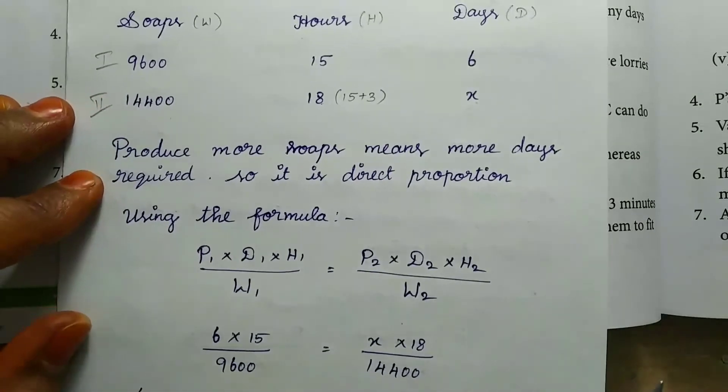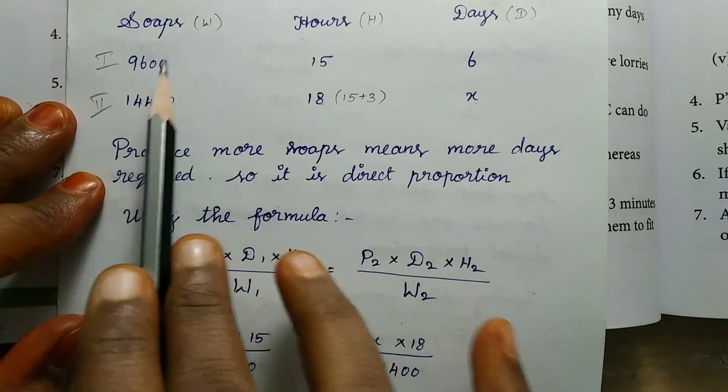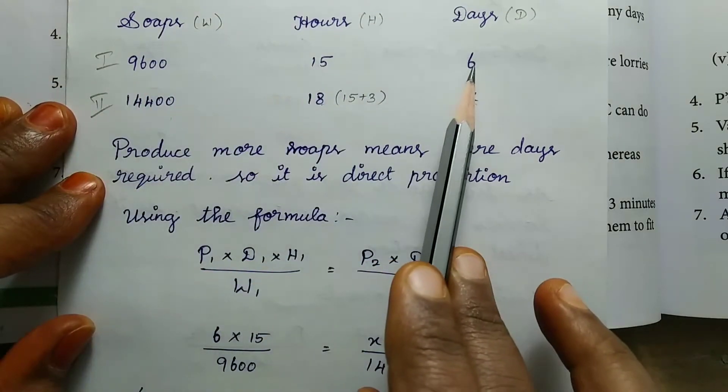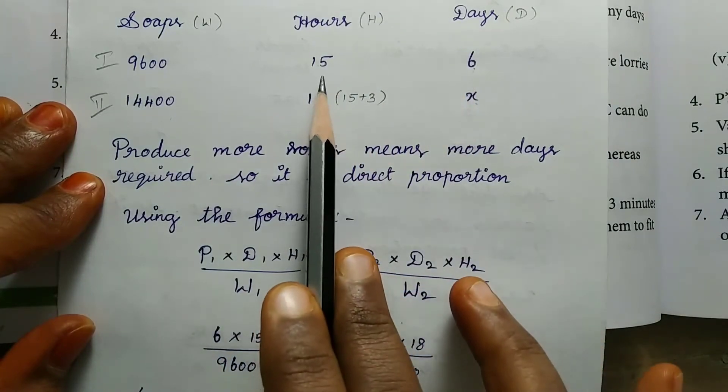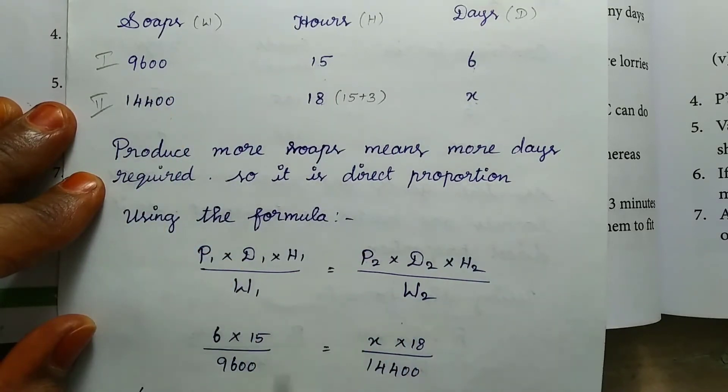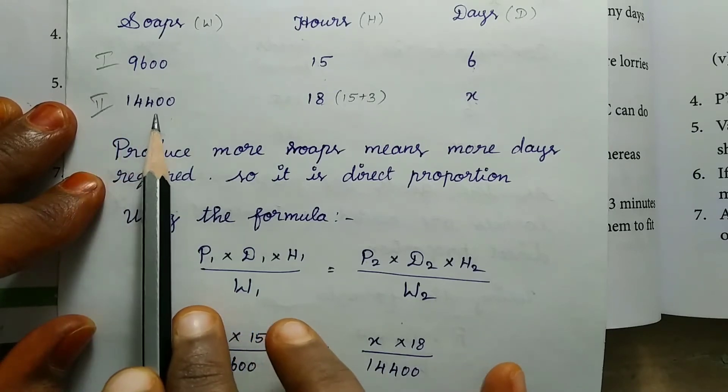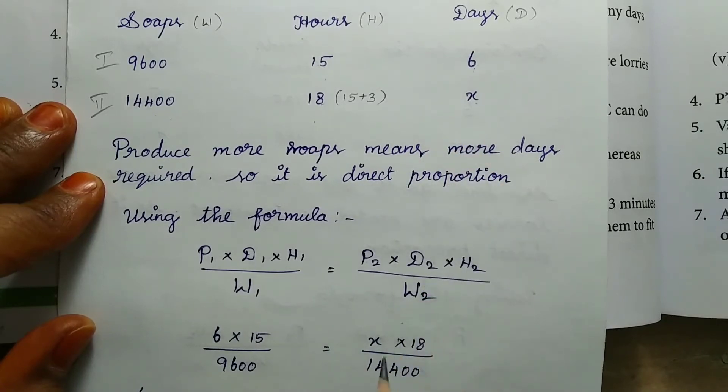So in the values that we apply, D1, this is first quantity, this is W1, H1, D1. So D1 value is 6 into H1 value is 15, whole divided by W1 value is 9600. That is equal to second quantity, W2, H2, D2. So D2 value is X, H2 value is 18, whole divided by W2 value is 14400.